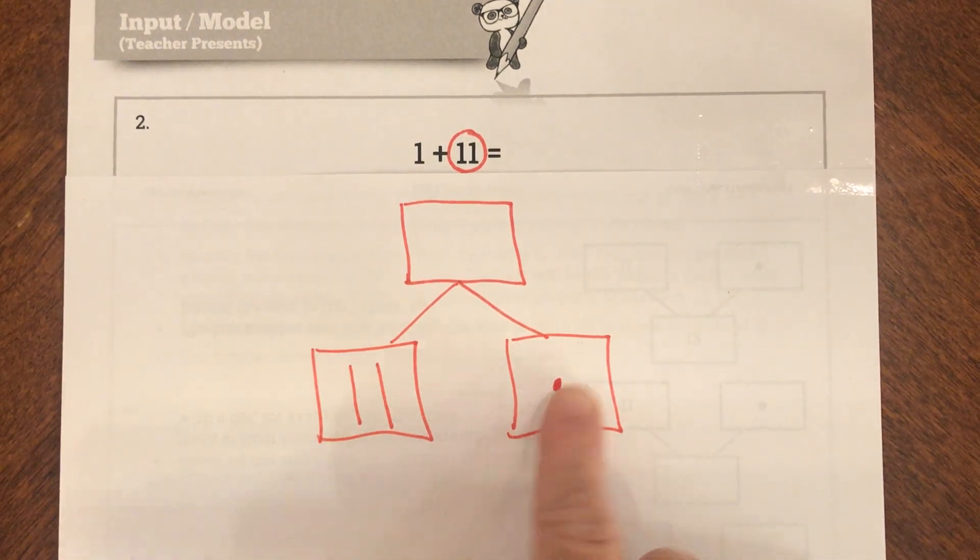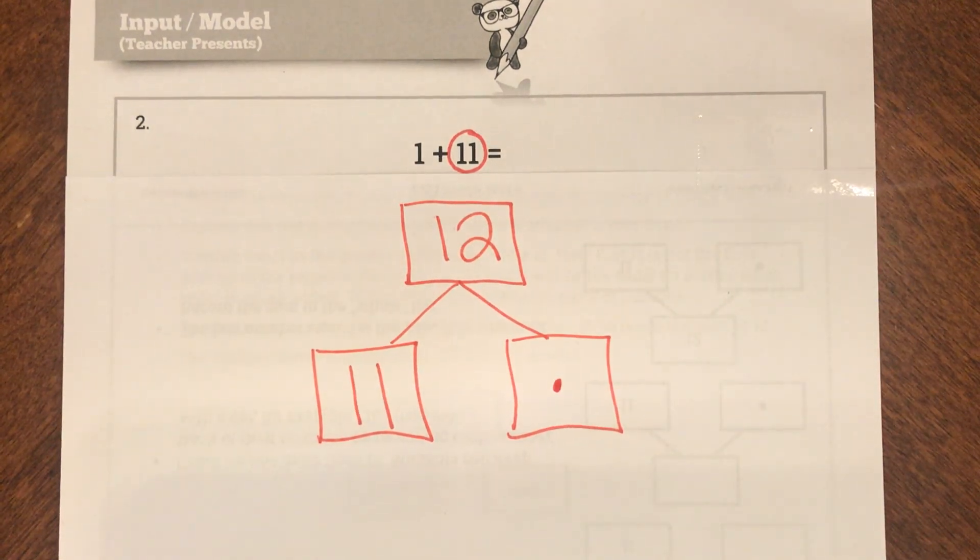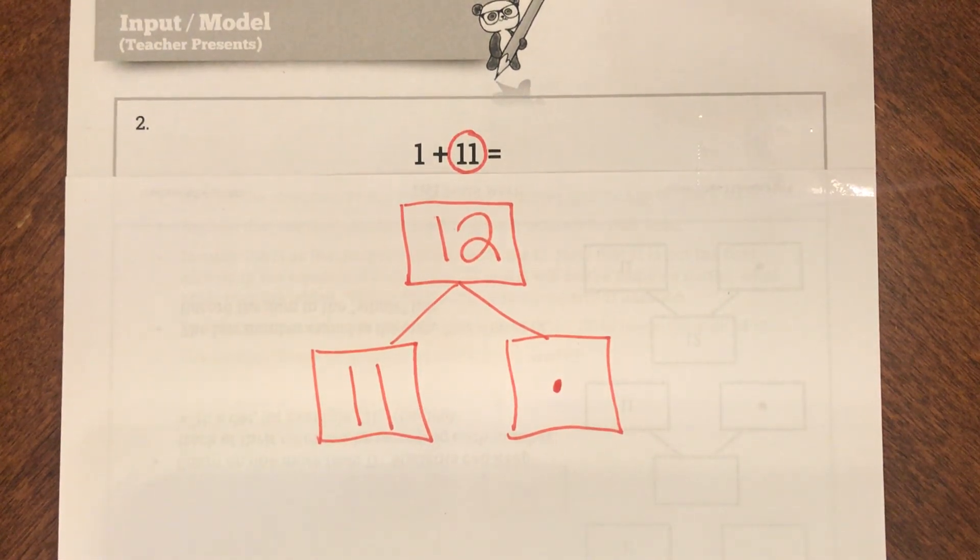But I know my first addend is 11. And they want me just to add one more. So I'm going to count on. So 11, 12. So my answer or my whole number is a 12. My whole number is a 12.